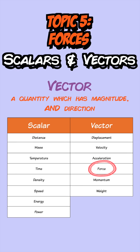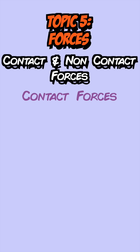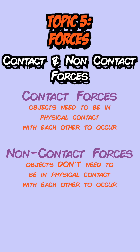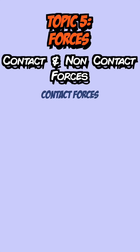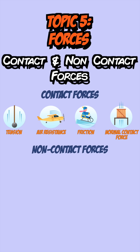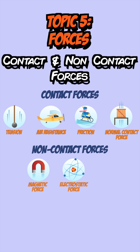Forces are an example of a vector and they can be divided into two groups: contact forces, where objects need to be in physical contact with each other to occur, and non-contact forces that don't. Contact forces include tension, air resistance or drag, friction, and the normal contact force. Non-contact forces include electrostatic force, magnetic force, and gravitational force, also known as weight.